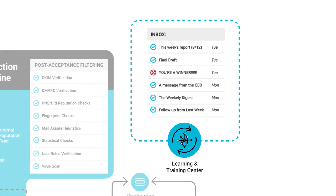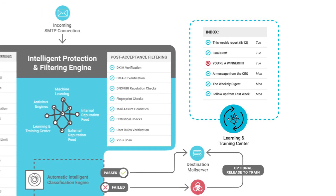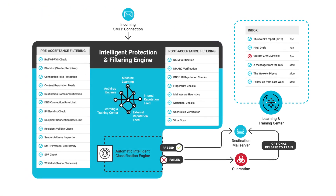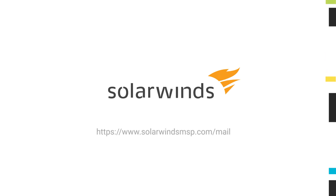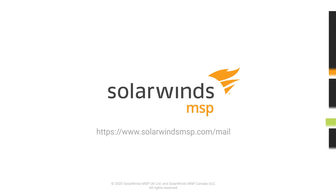In short, the Mail Assure proprietary self-learning technology was designed to help keep you from making that disastrous click. Try it free today. Visit SolarWindsMSP.com.